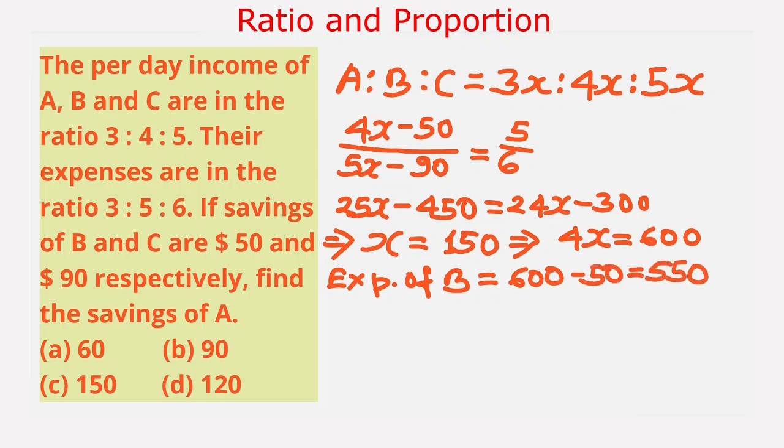Now we have to find the savings of A. We know the income of A is 3x, and if we find the expenses of A, then we will be able to find the savings of A.